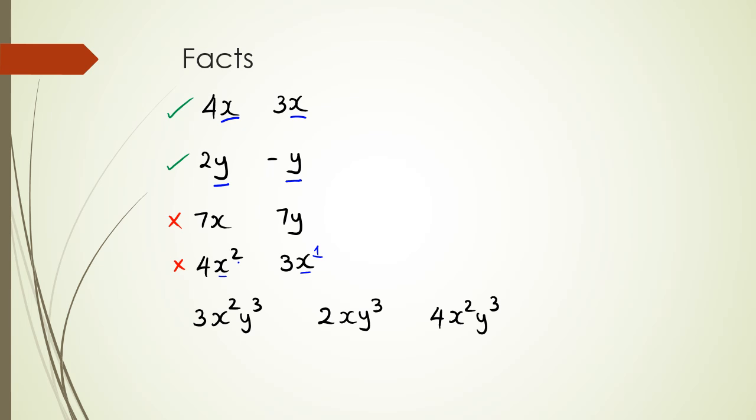Out of these three, if I try and look at which two of them are like terms, I need to look at the variables. What I'm going to do is look at my x's first. I've got x squared here but I've got x here, so straight away these two are not going to work out, and I've got x squared here.